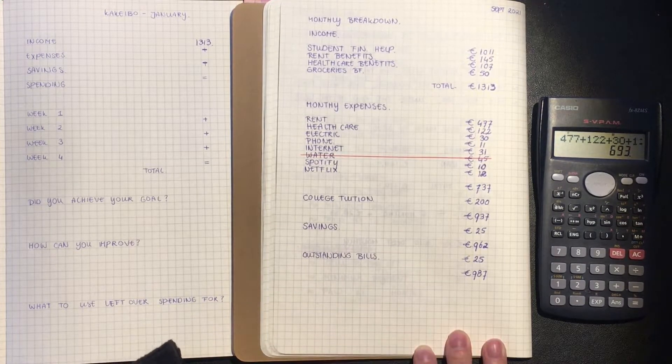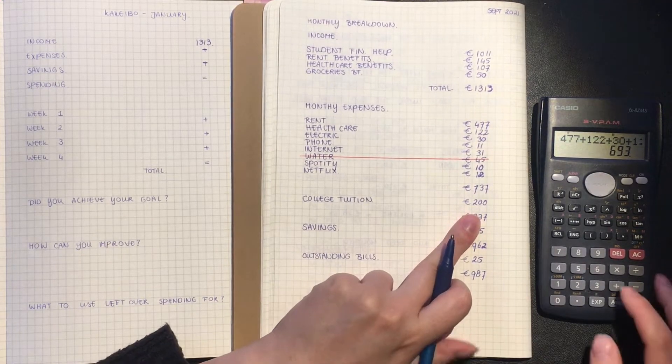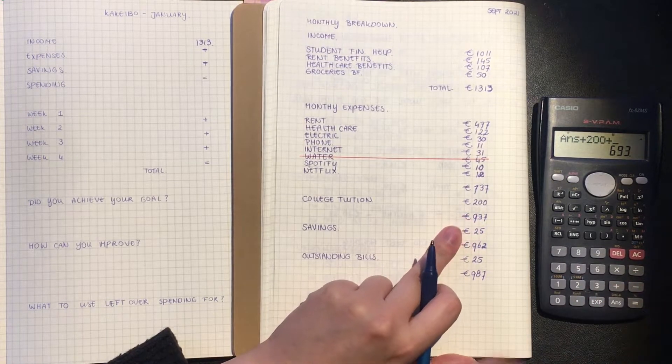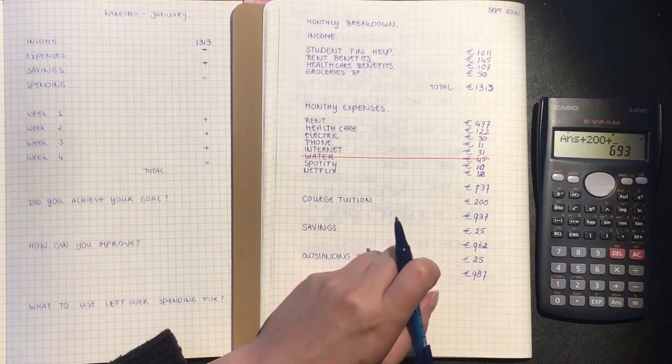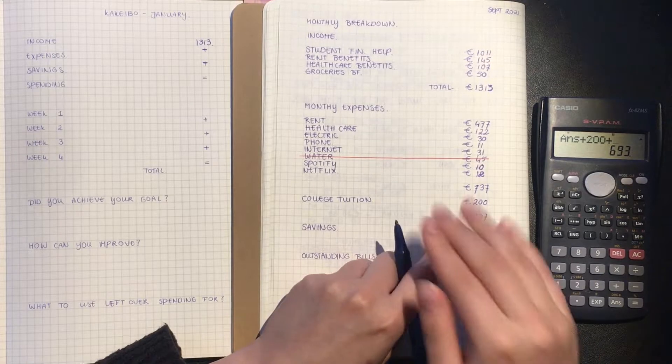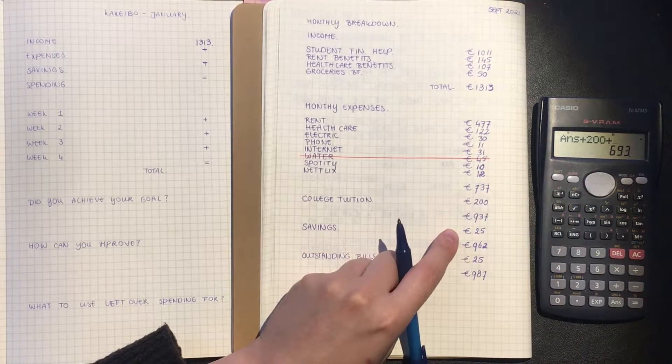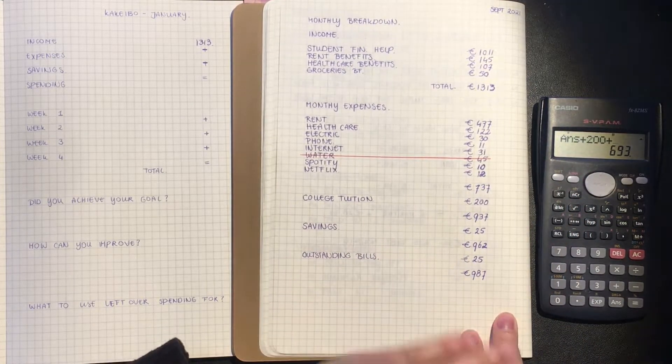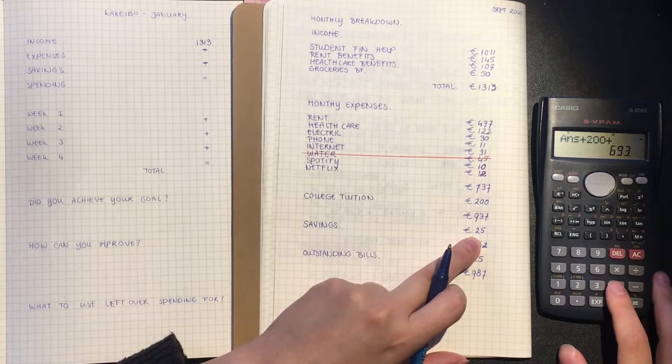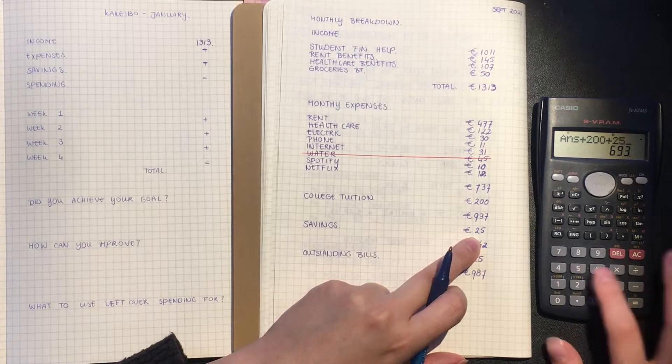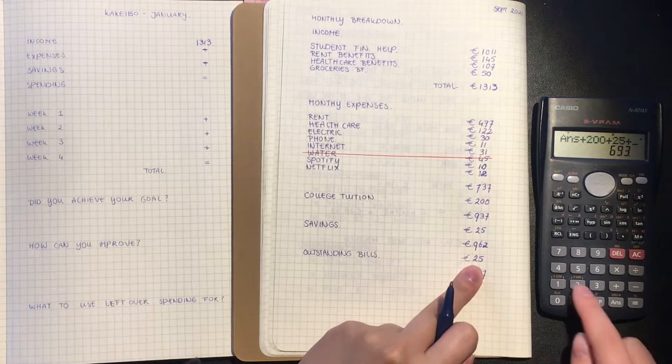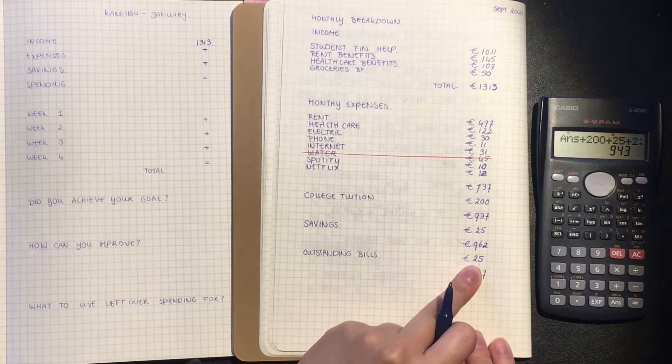Next up, we also add up tuition. Every month I set aside 200 euros for tuition so that I can pay my tuition in full, so there's no additional fees or administration costs. Next up is my electronic savings, which is 25, and then some outstanding bill which is also 25.